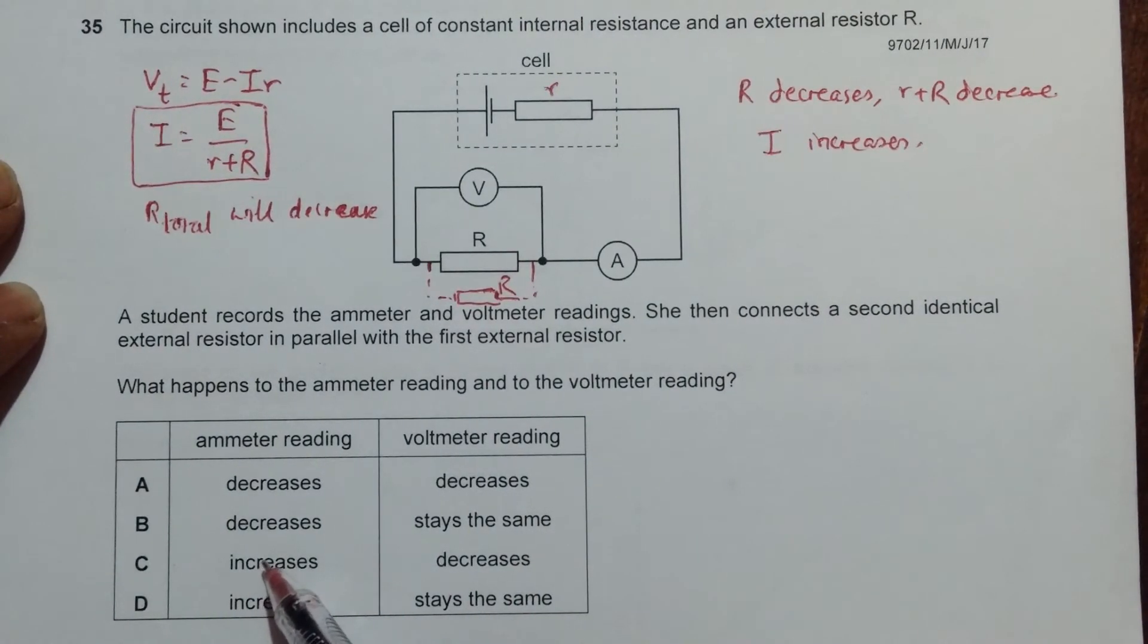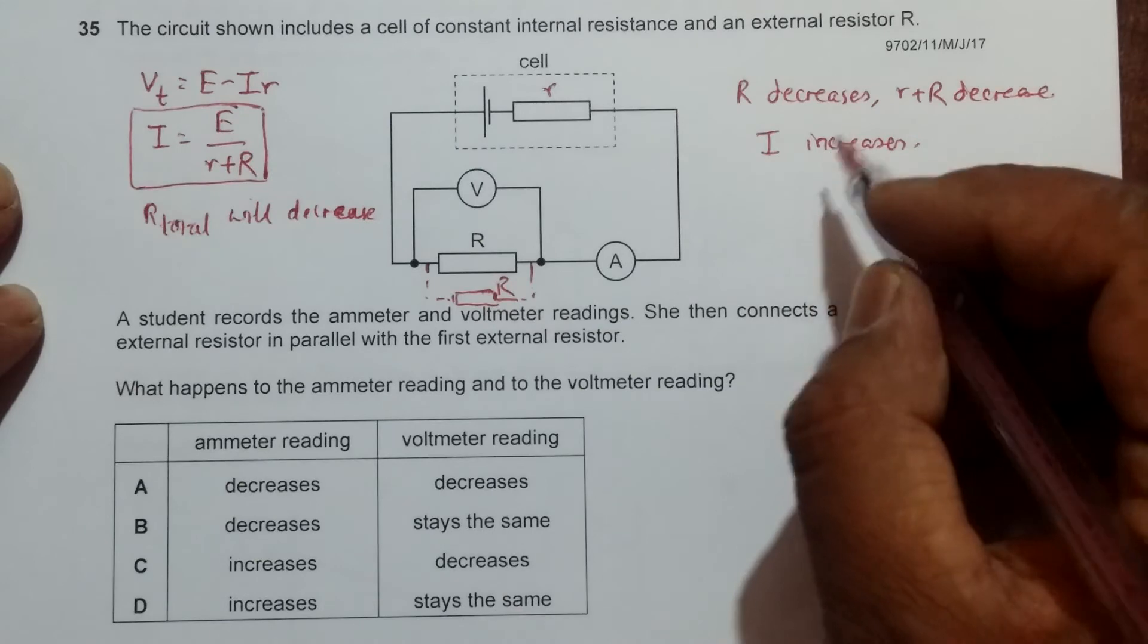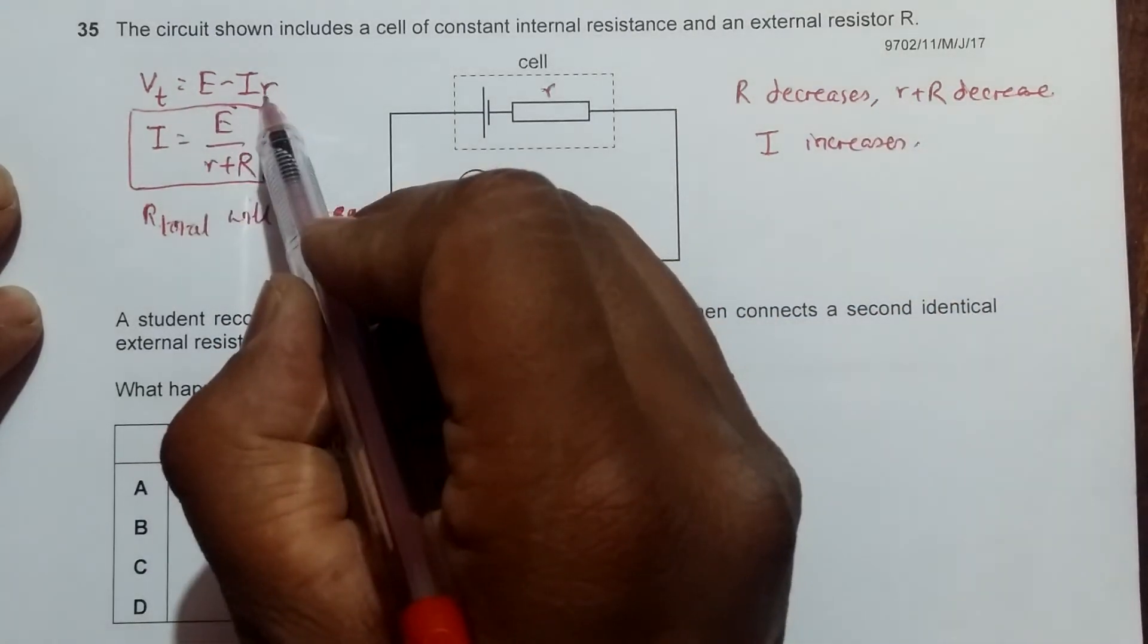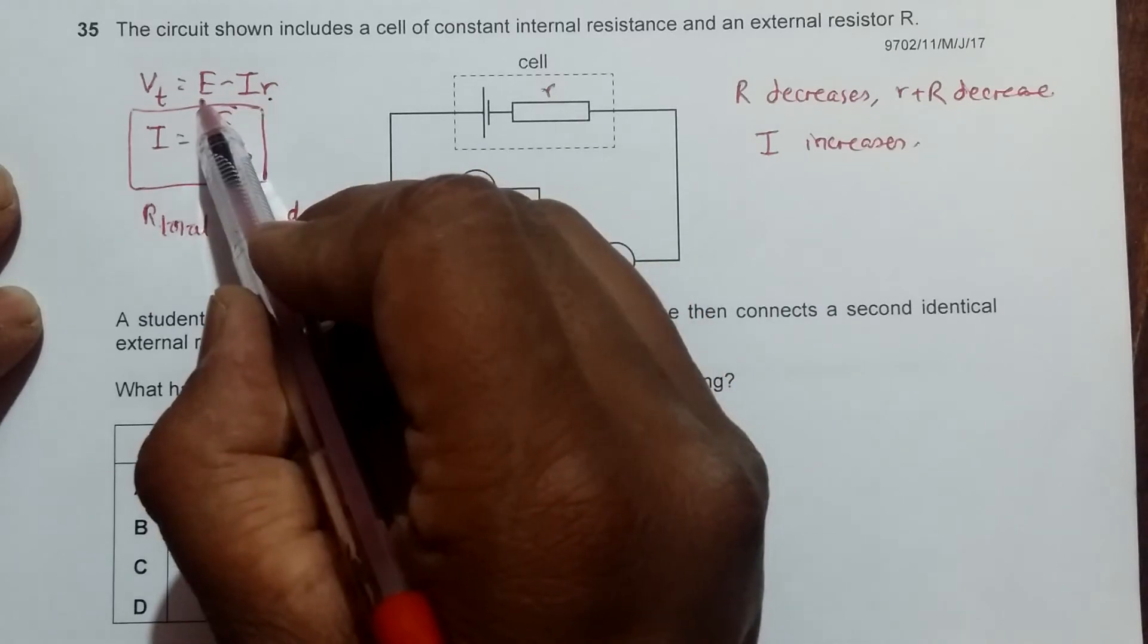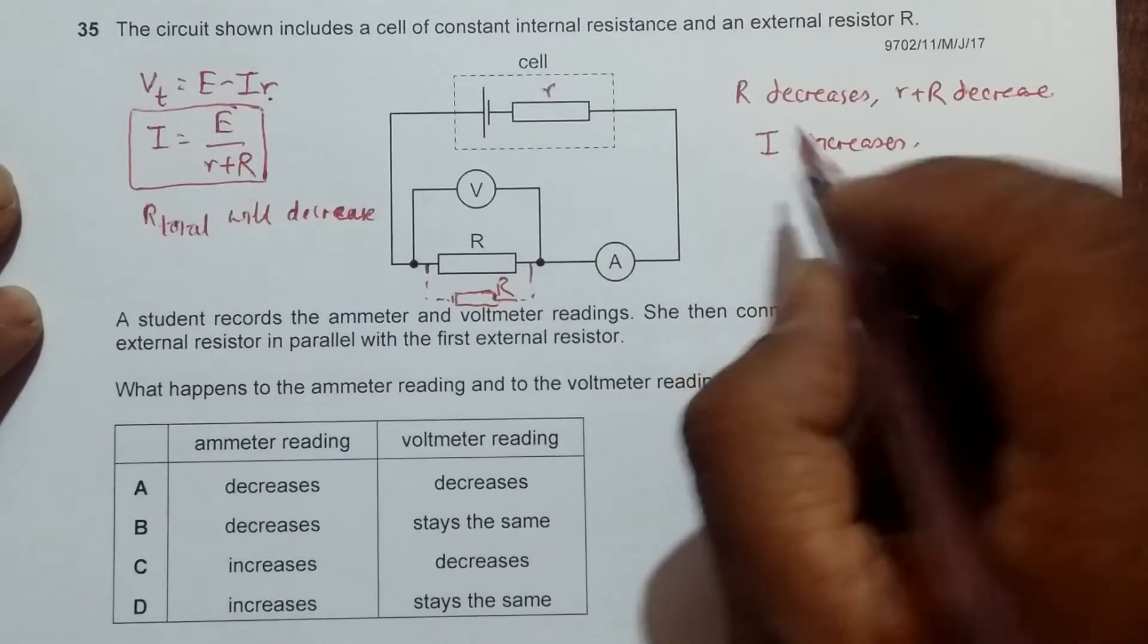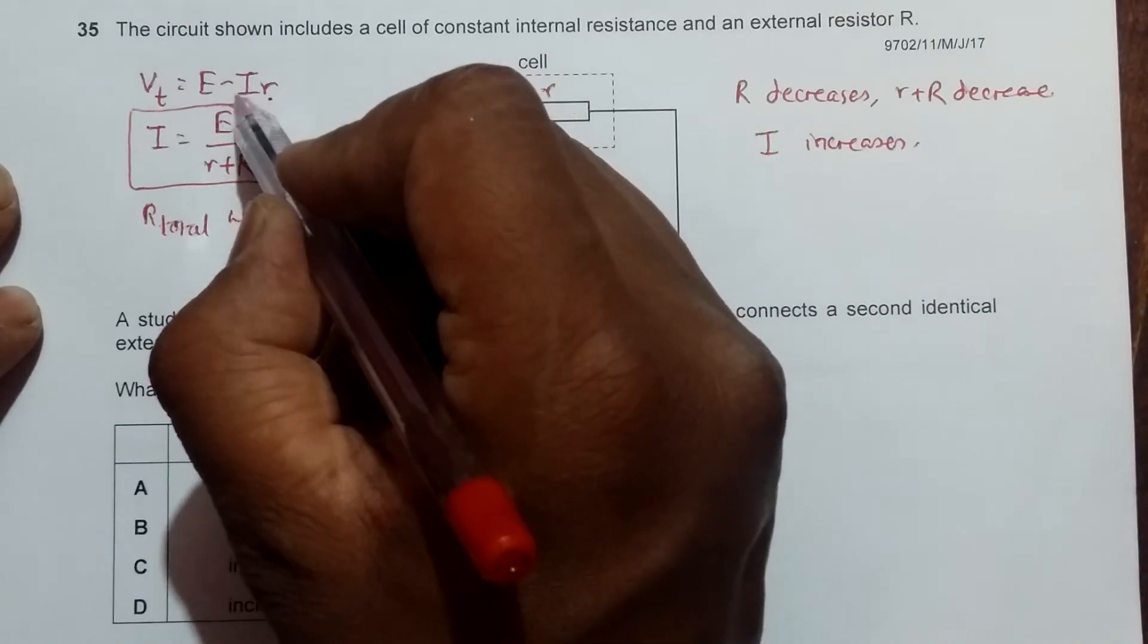Now if I apply the same condition here, small r is constant, E is constant. Now if I decreases, then this whole quantity should decrease.